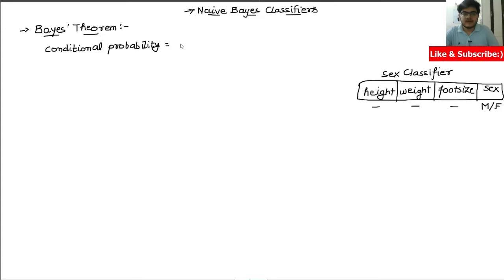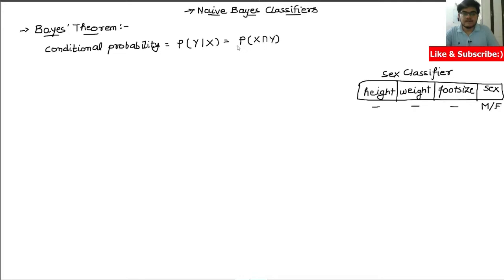In conditional probability we have the formula: P(Y|X) = P(X ∩ Y) / P(X). This is the conditional probability formula.